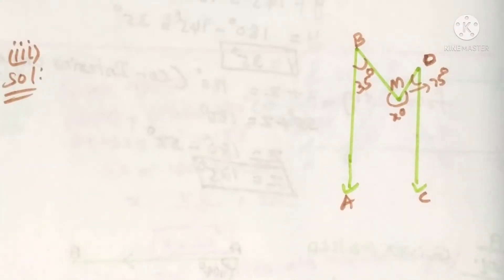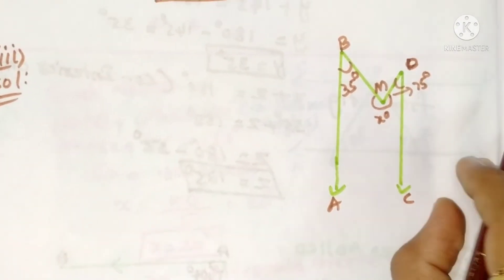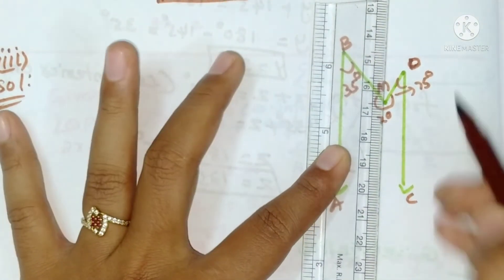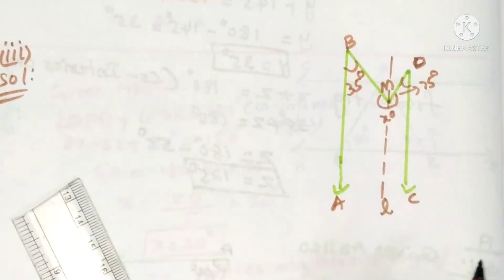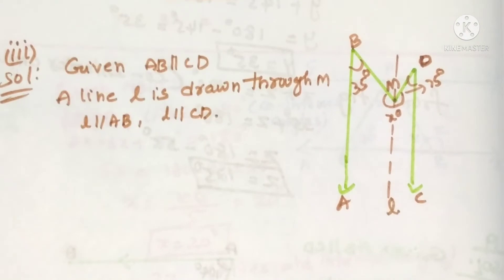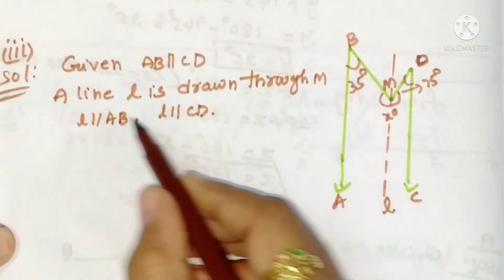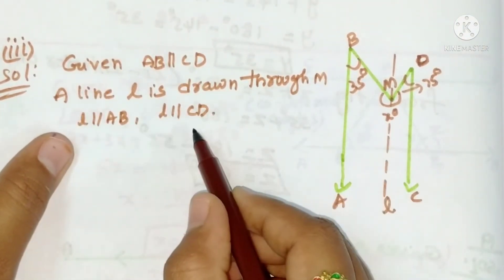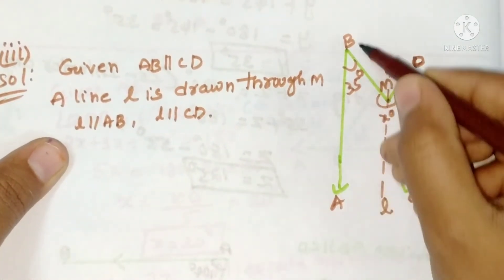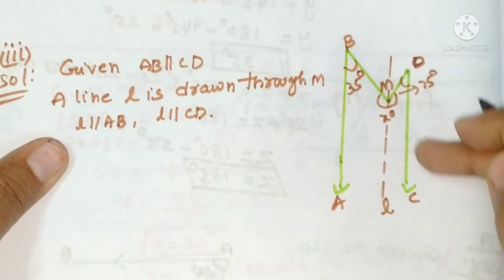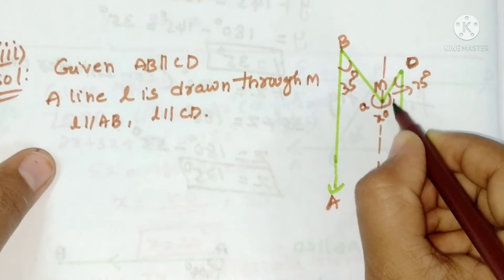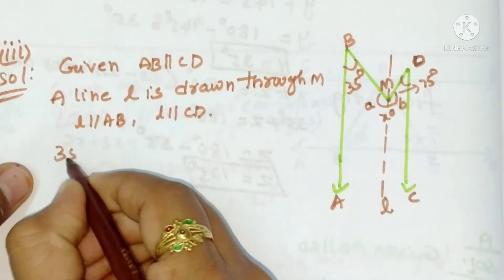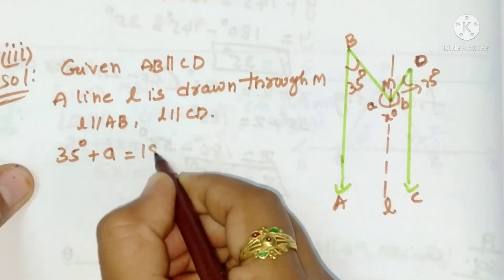In the third figure, we also want to find the value of x. Through point M, draw a line L parallel to AB and CD. A line L is drawn through M: L parallel to AB, L parallel to CD. AB and L are parallel, and BM acts as a transversal. Let angle a and angle b be as marked. 35 degrees and a are co-interior angles.